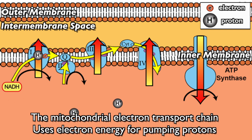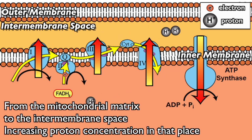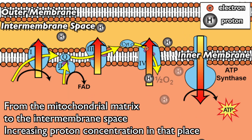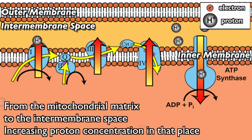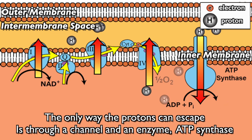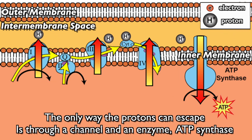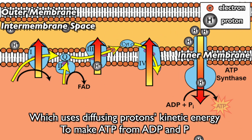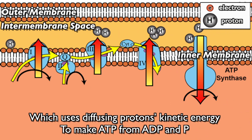The mitochondrial electron transport chain uses electron energy for pumping protons from the mitochondrial matrix to the intermembrane space, increasing proton concentration in that place. The only way the protons can escape is through a channel and an enzyme — ATP synthase — which uses diffusing protons' kinetic energy to make ATP from ADP and P.